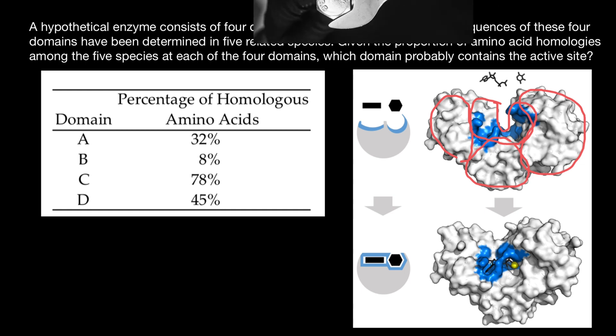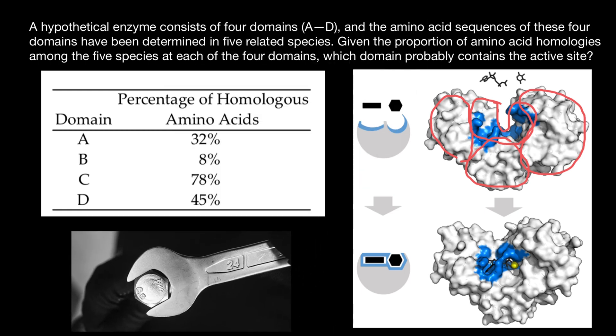Now I want you to take a look at this picture. This is a wrench, and you can think about a wrench just like an enzyme. For example, what's going to happen if we use a different alloy for the handle? Probably not too much.